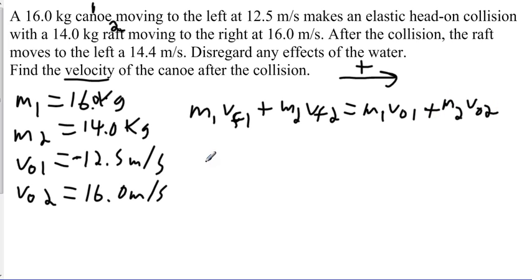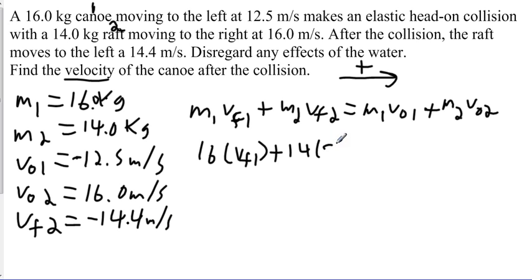And we just start plugging in the values that we have. And we have 16 times vf1, which is what we're looking for, plus 14 times, and our final velocity here, for the raft is negative 14.4 meters per second. So times negative 14.4 is equal to 16 times negative 12.5 plus 14 times 16.